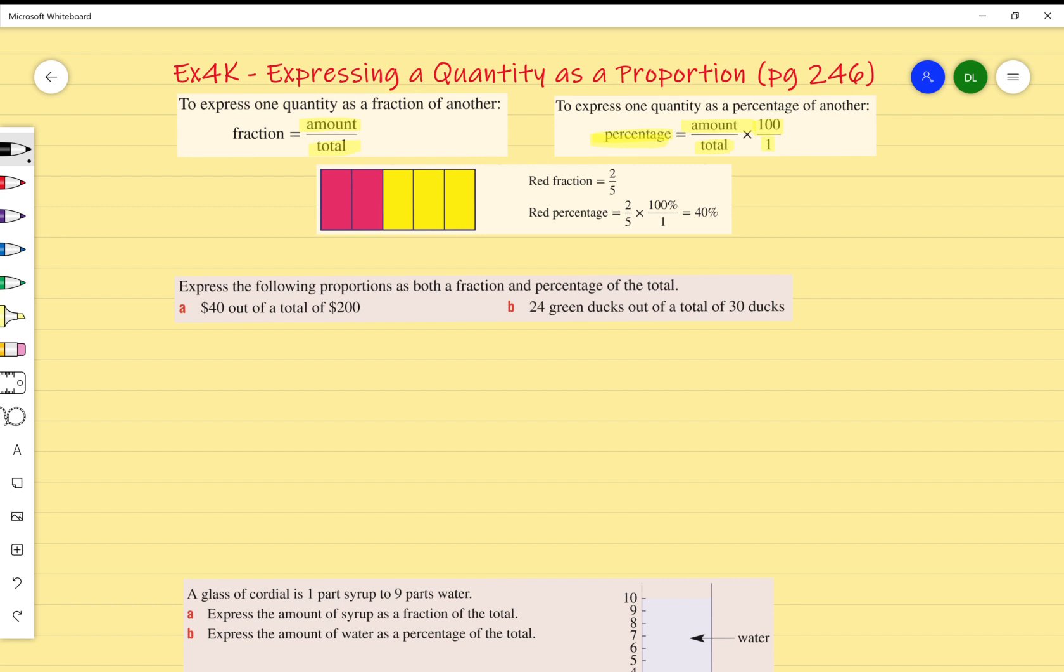Let's start with fraction. If I start with $40 out of a total of $200, I know my 40 is on top and my 200 is on the bottom because it's the total. I'm going to simplify that.